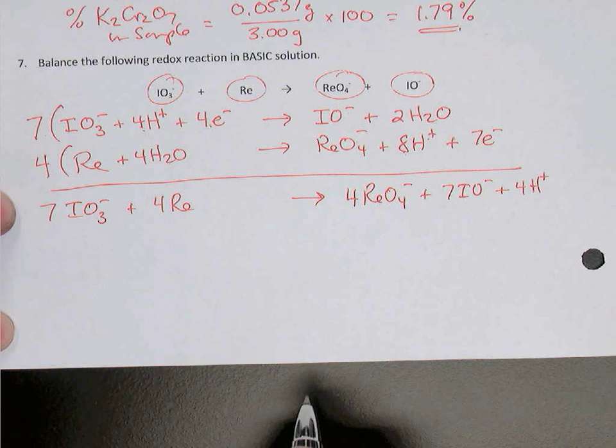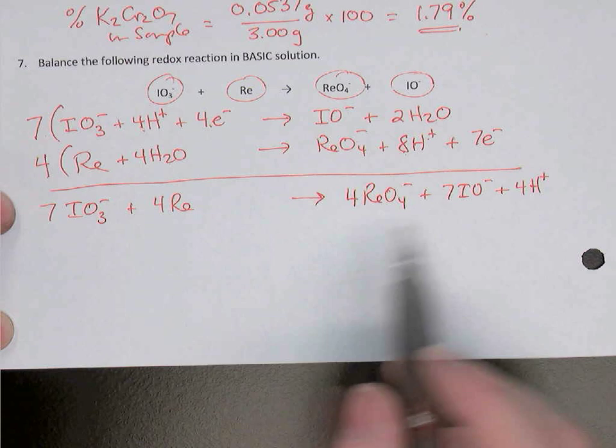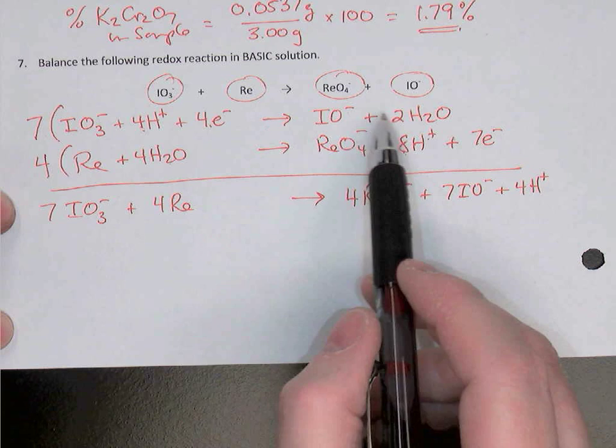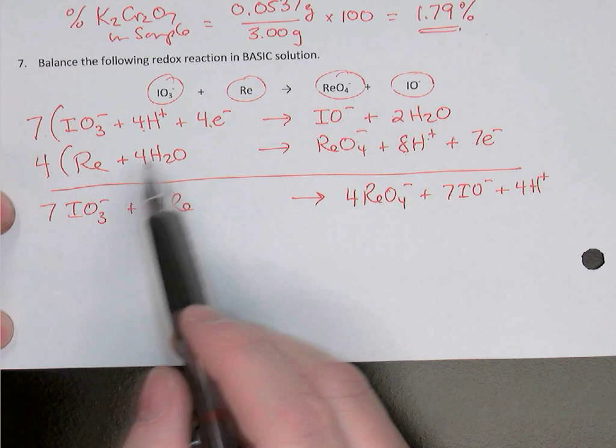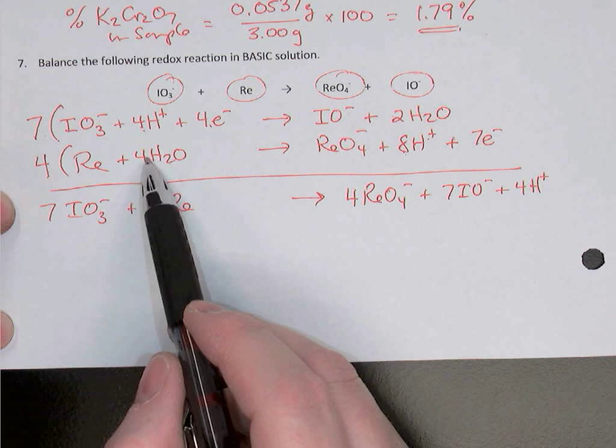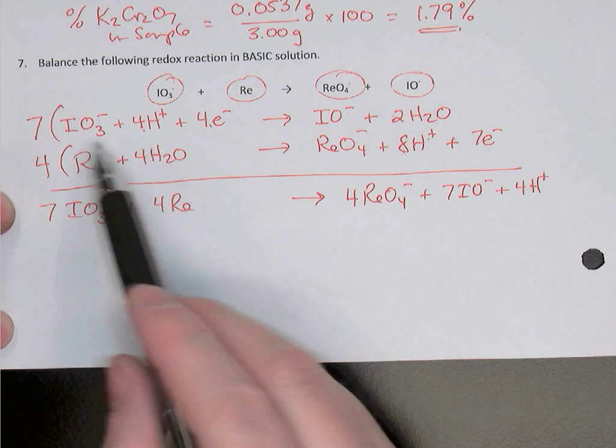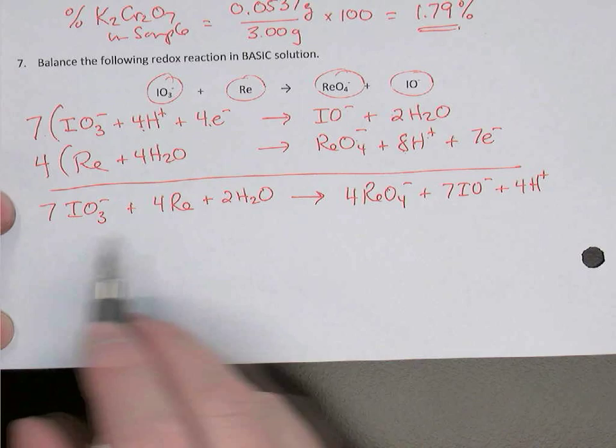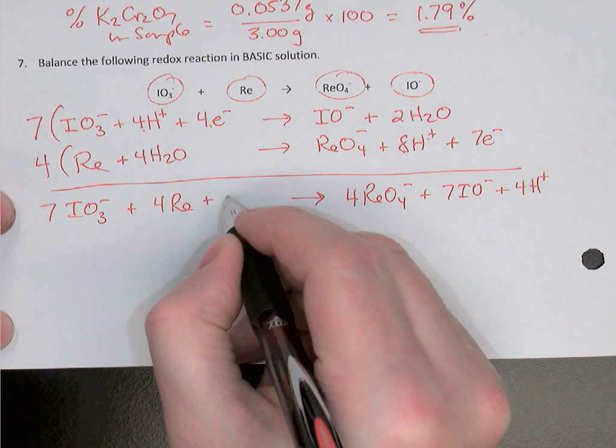Do the same for water: seven times two gives 14 waters on the right of the first equation; four times four gives 16 on the left of the second equation. So 16 on the left and 14 on the right — the difference is two — and since there were more on the left, those two end up on the left after canceling. We now have a balanced redox reaction, but it's currently in acid solution.